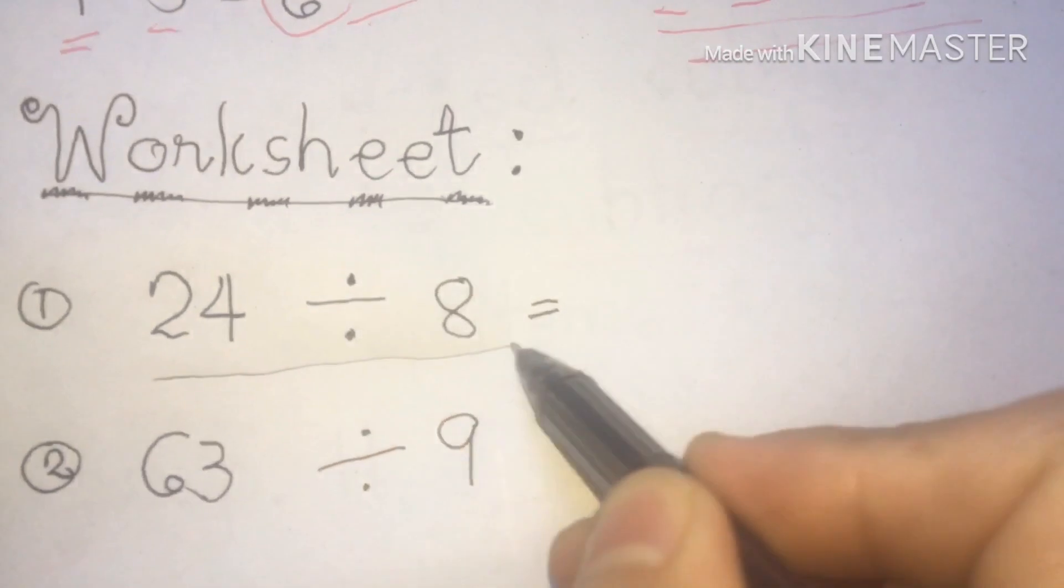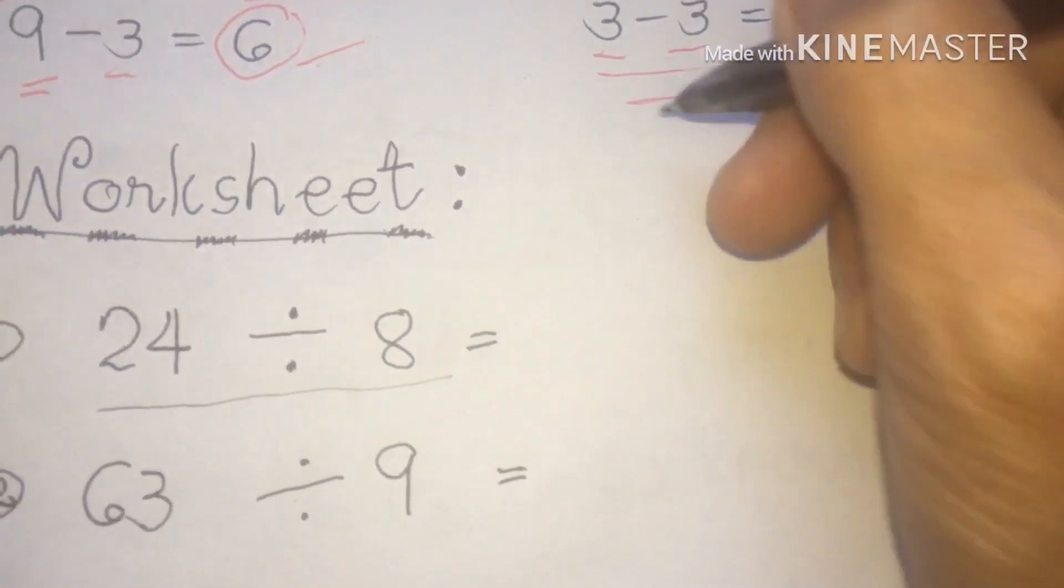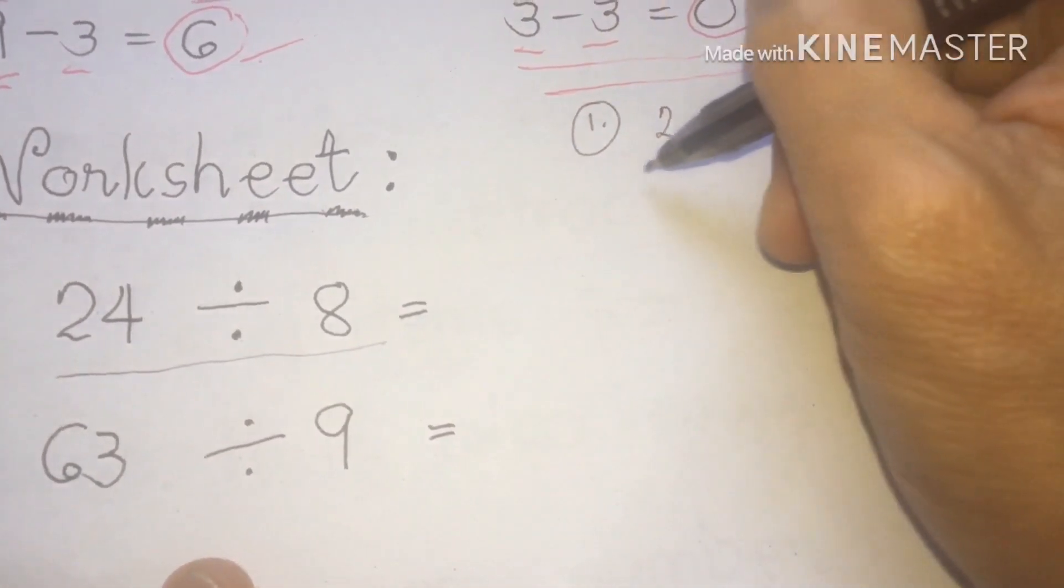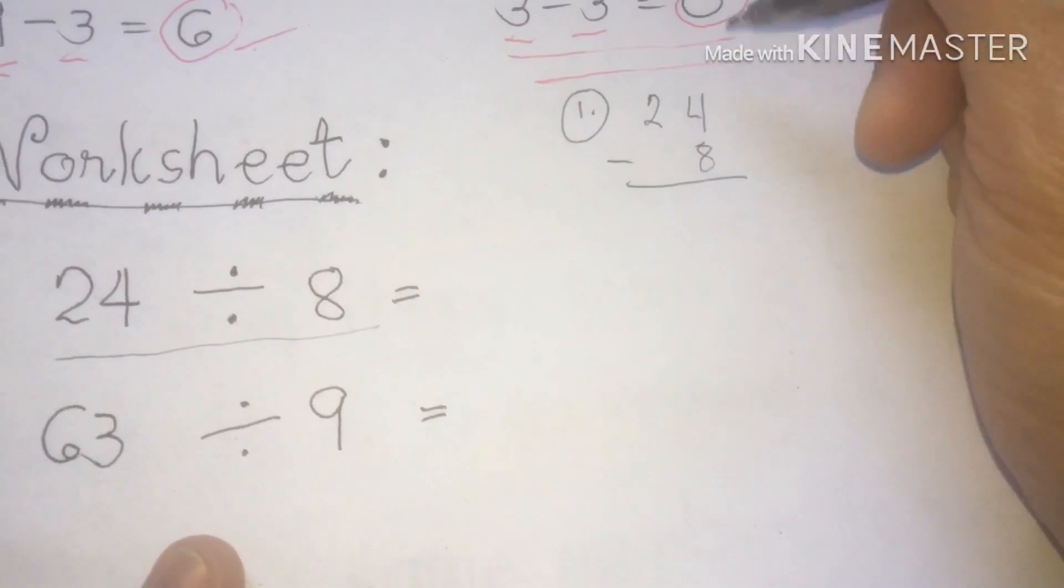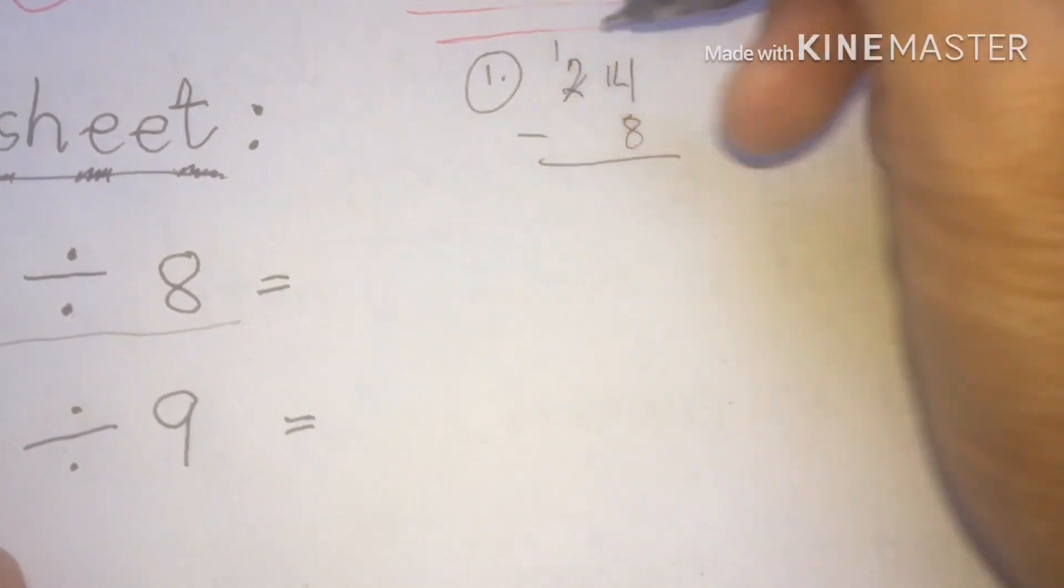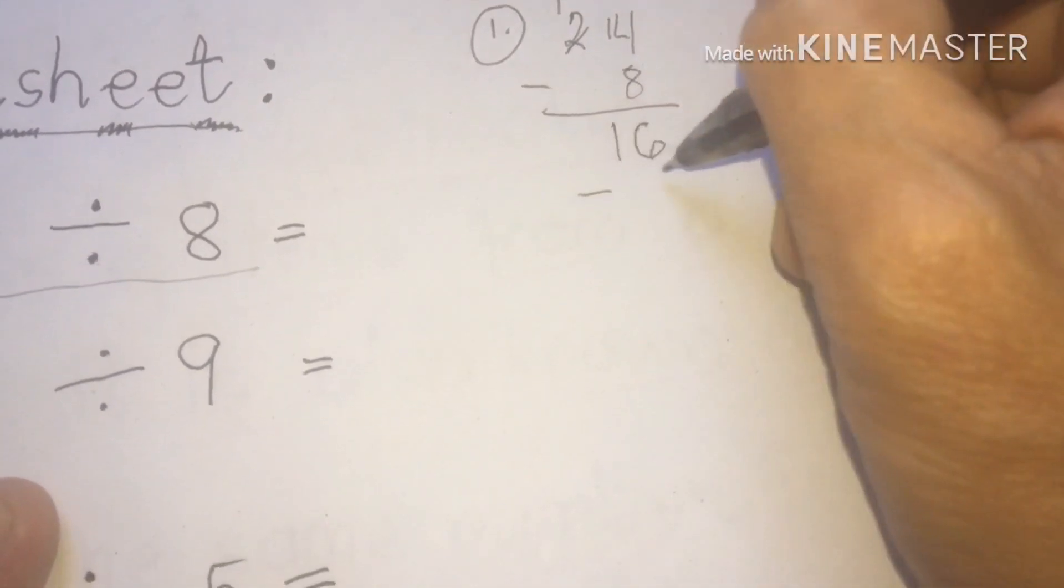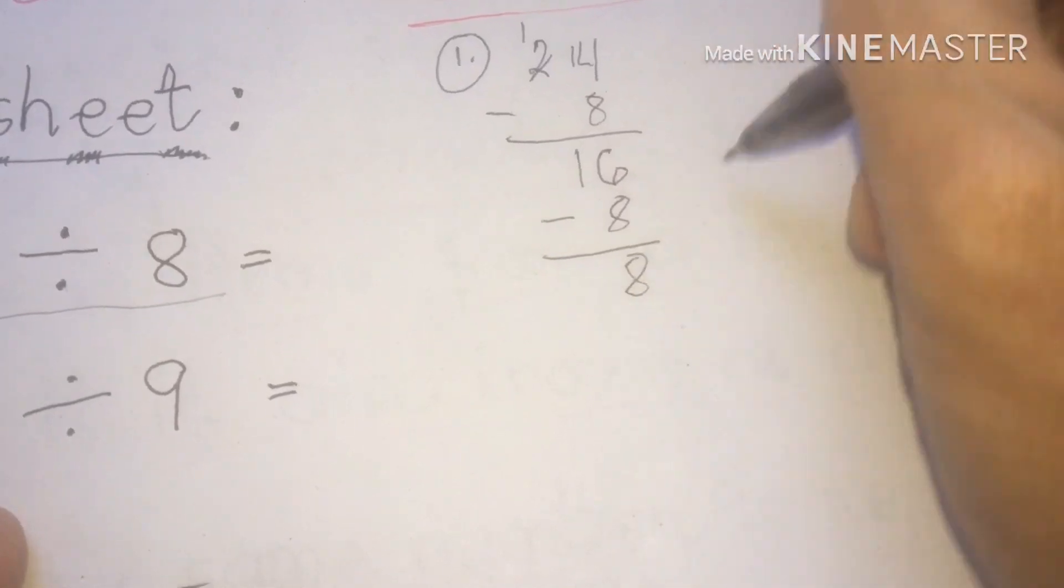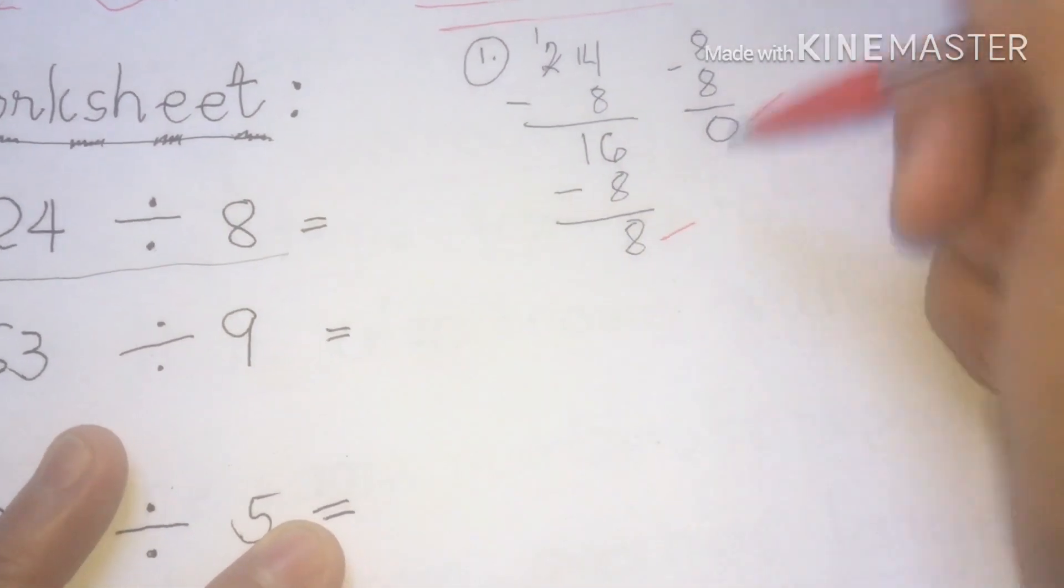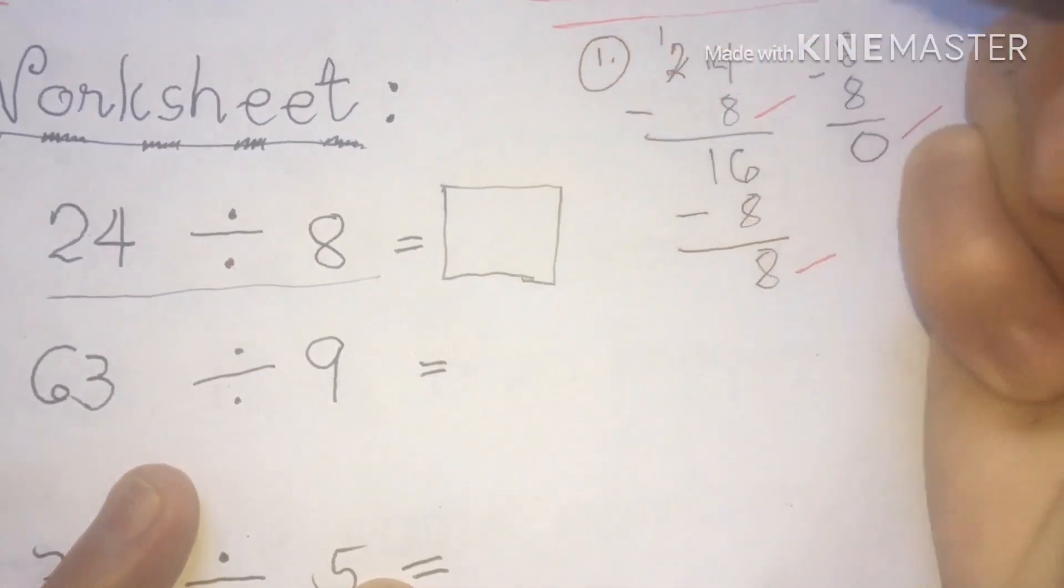We have given question 24 divide 8. So we are going to subtract using subtraction method. We're going to write here 24. This is for number 1. Minus 8. We're just using the regrouping process. So 4 becomes 13 and 2 becomes 1. We have here 5, bring down 1, 16. Continue. Minus 8. That's 8. Then 8 minus 8 is 0.